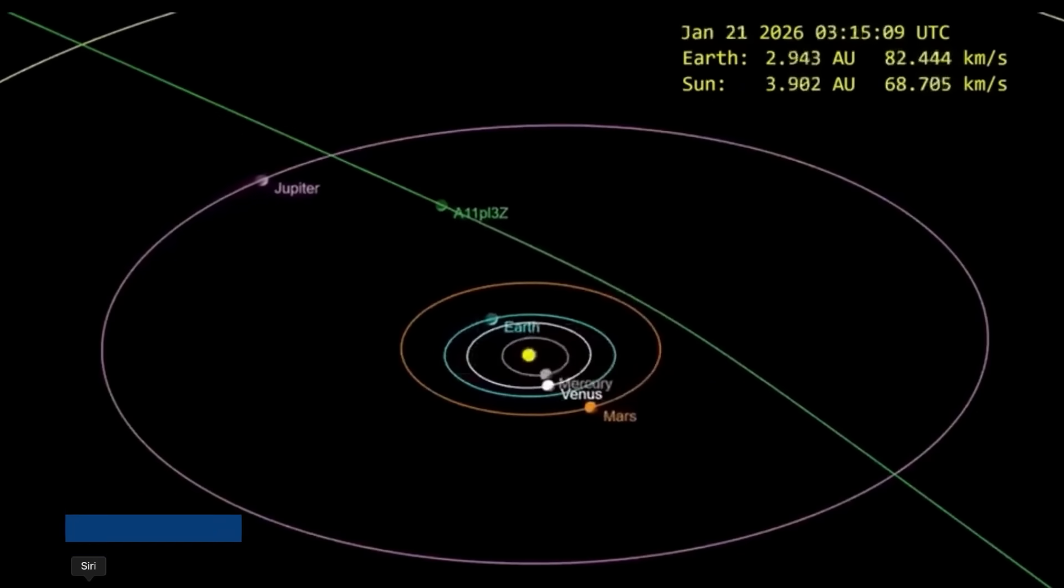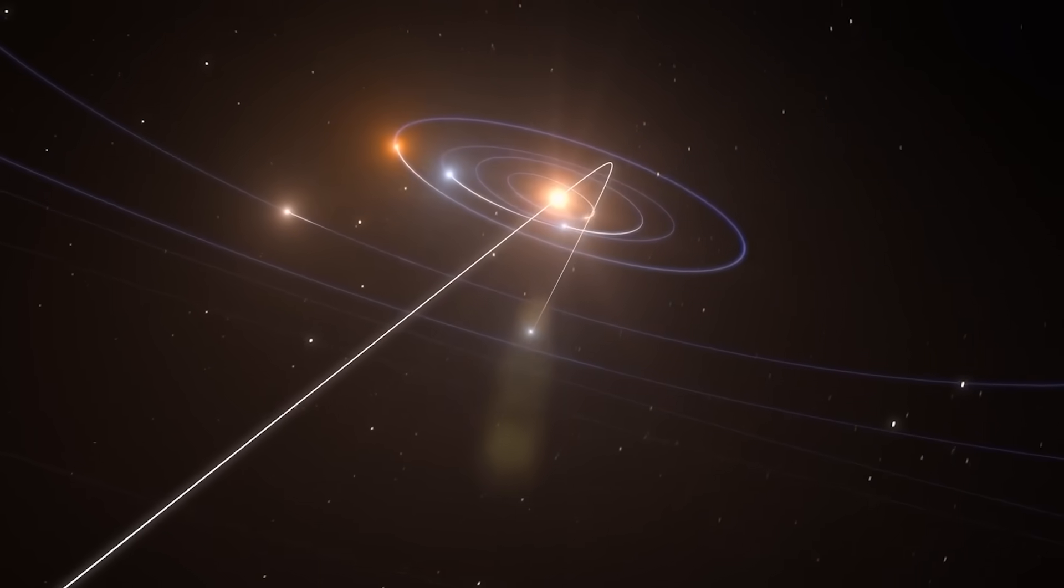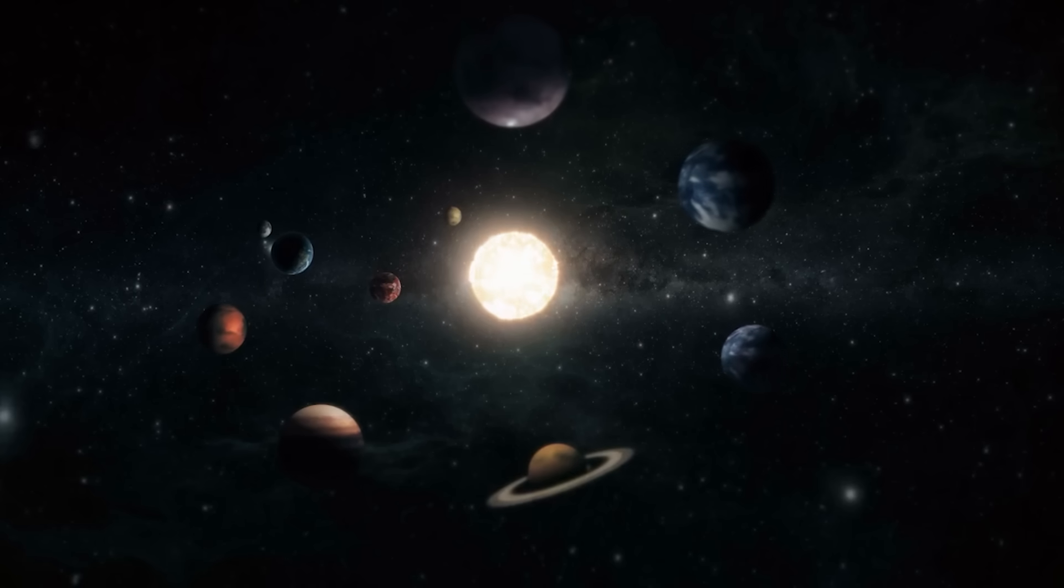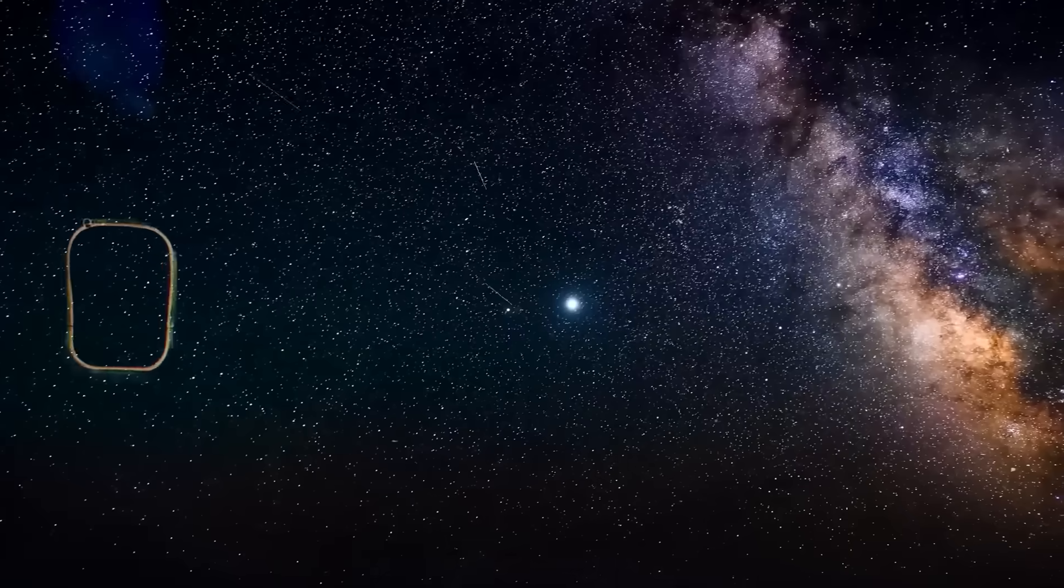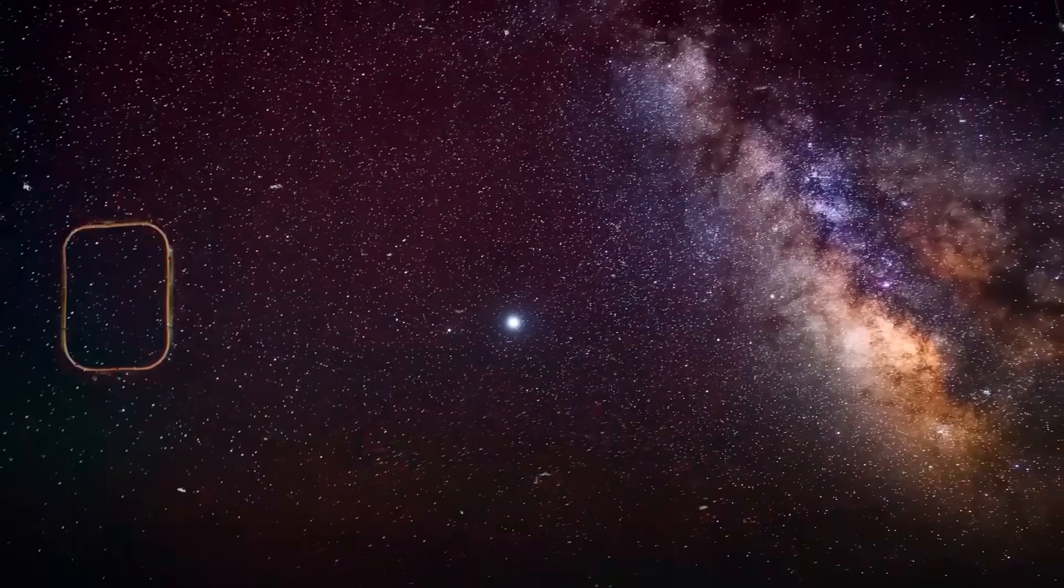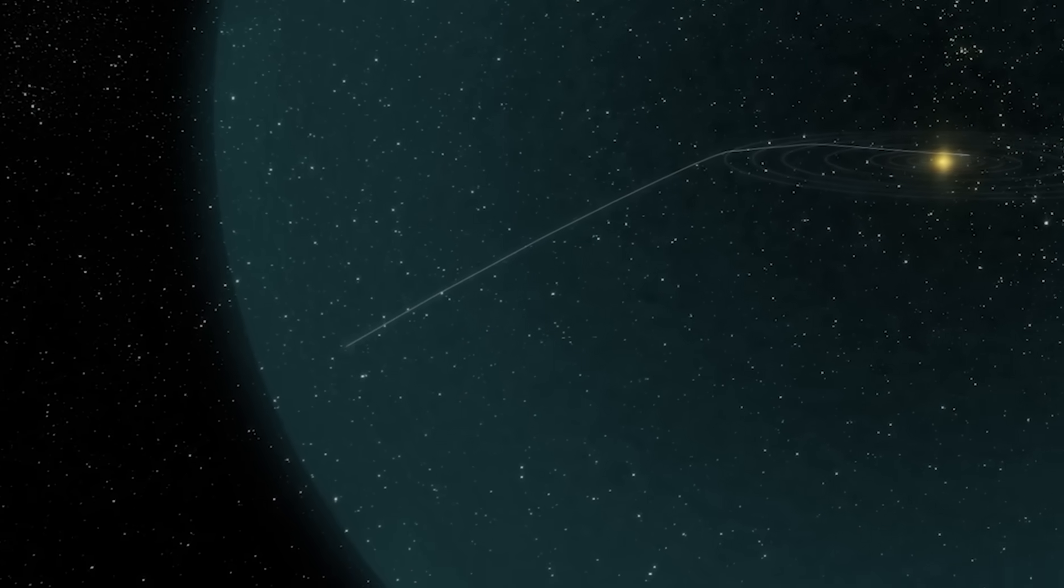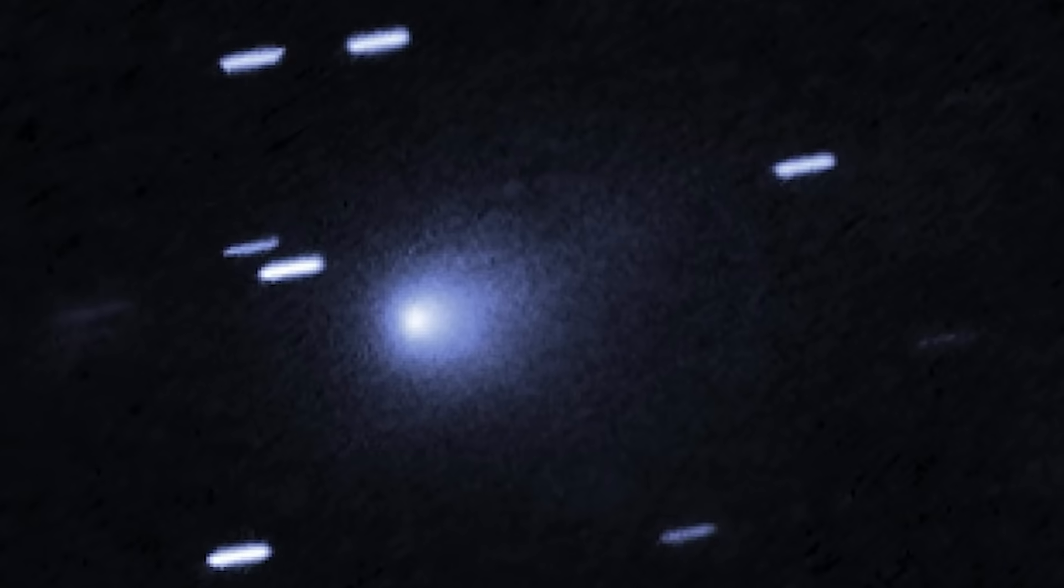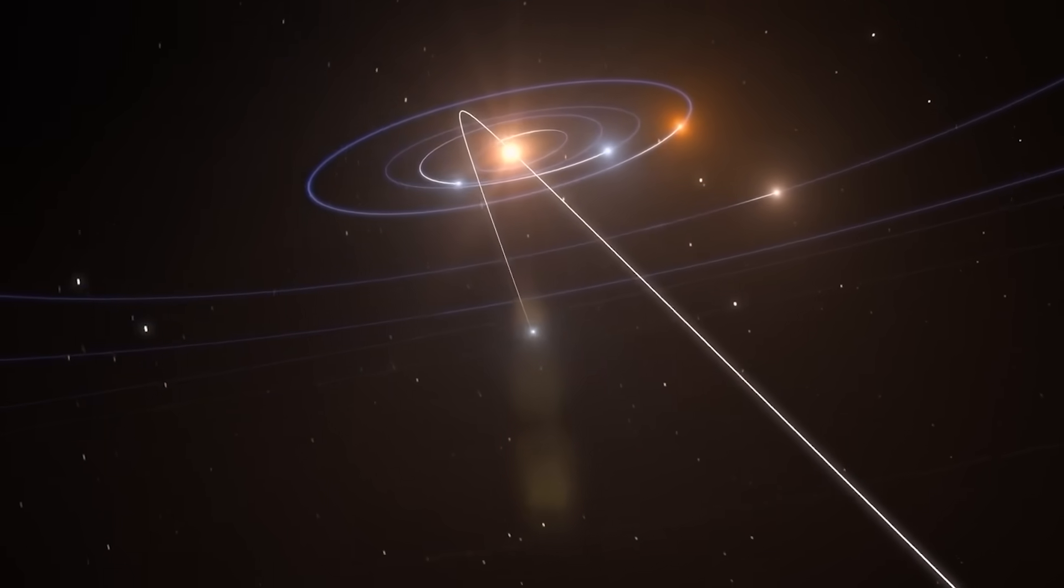Its closest approach to the sun happens on October 29th. That's when its path curves nearest our star, the point where gravity can sling it onto a new trajectory. But here's the problem. During that time, Earth will be on the opposite side of the sun. Our own star will block our view completely. We won't see it, won't track it, won't know what it's doing. It's the perfect moment for an object to change direction or disappear entirely.